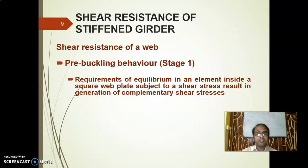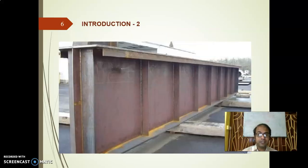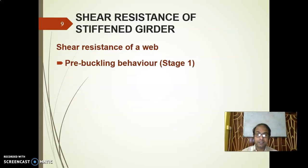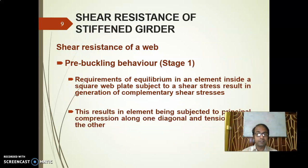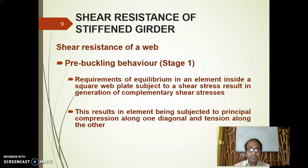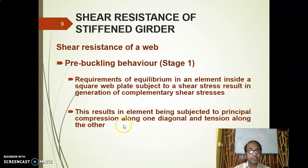Requirement of equilibrium in an element inside the square web plate subjected to shear stress results in generation of complementary shear. This results in the element being subjected to principal compression along the diagonal and tension along the other diagonal. Let us see.